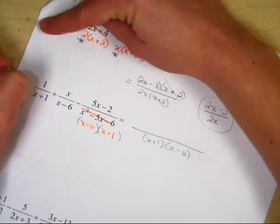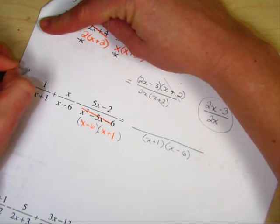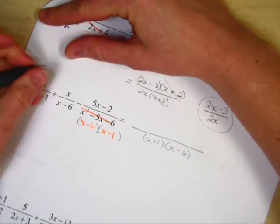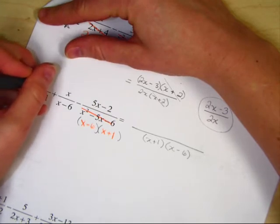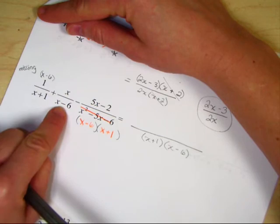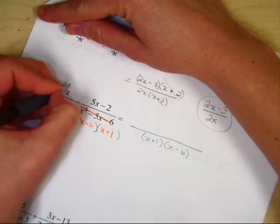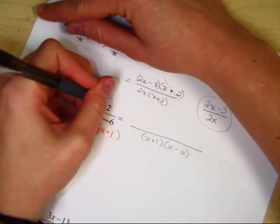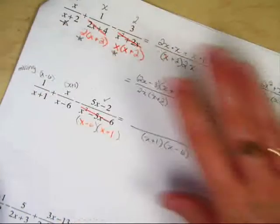Now we need to figure out what's missing. This 1, the bottom, is going to need an x minus 6. So so will the top. This x minus 6 needs an x plus 1. And this 5x minus 2 doesn't need anything.